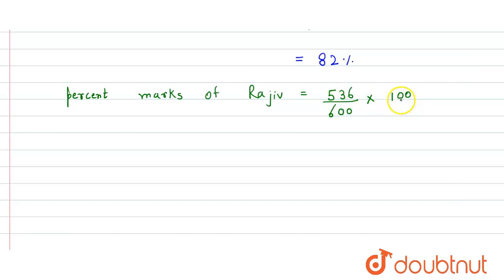So now we solve it. This 100 cancels this one and we get 6, and this 6 and 536 cancel out by 2, so we get 3 and 268. We get equals to 268 divided by 3.